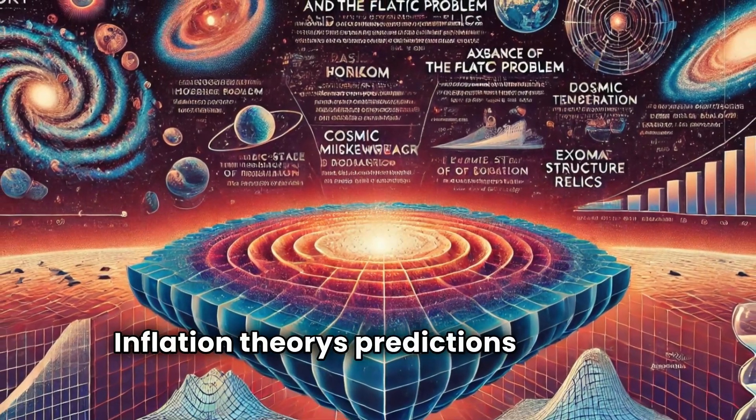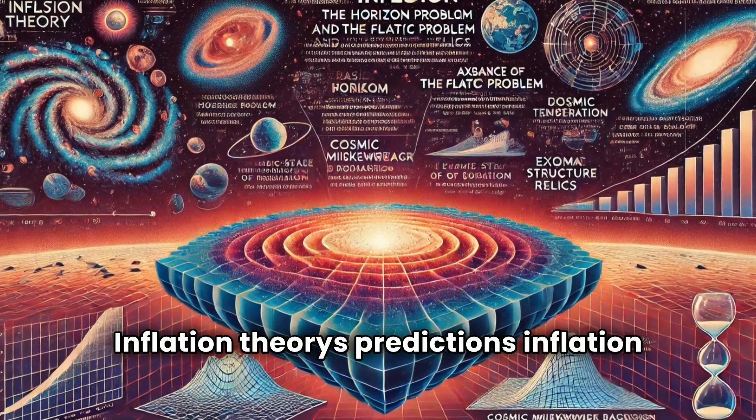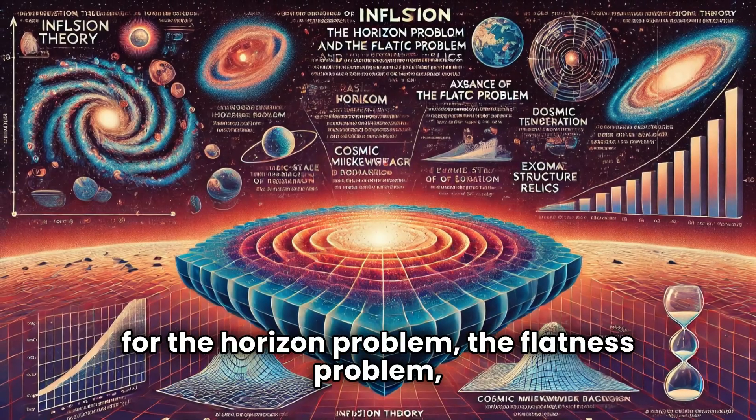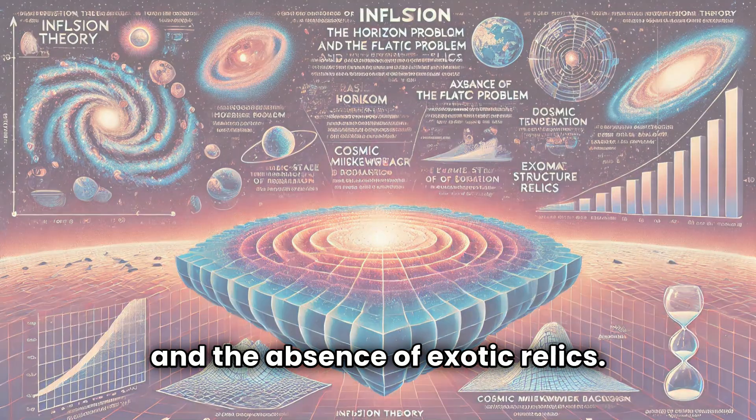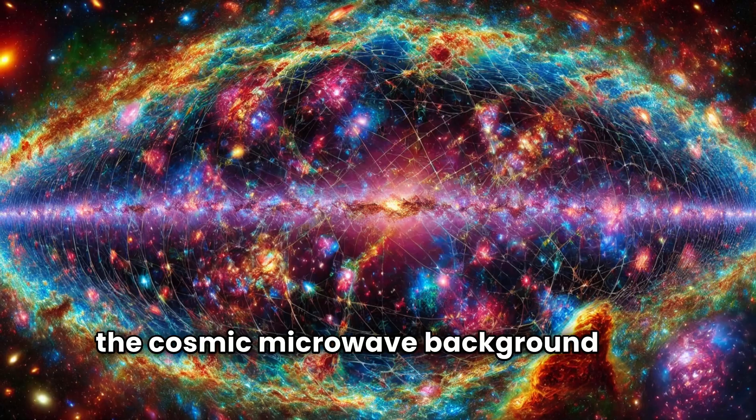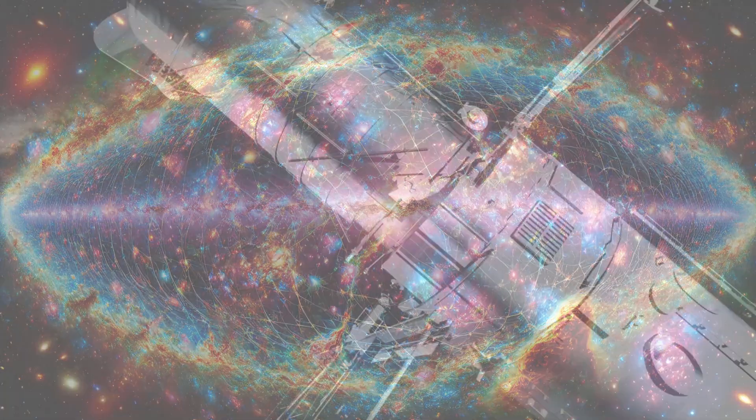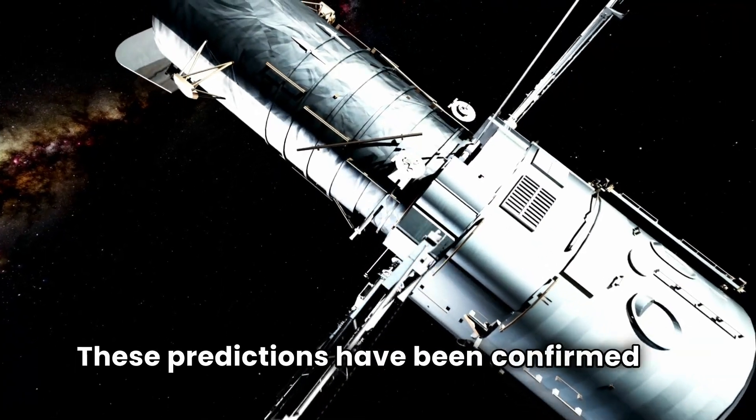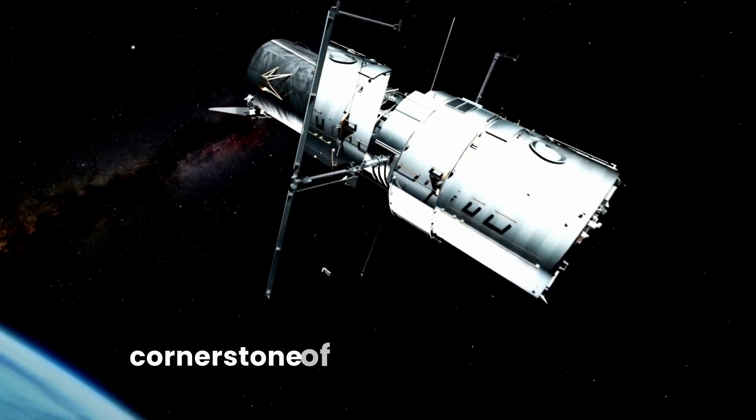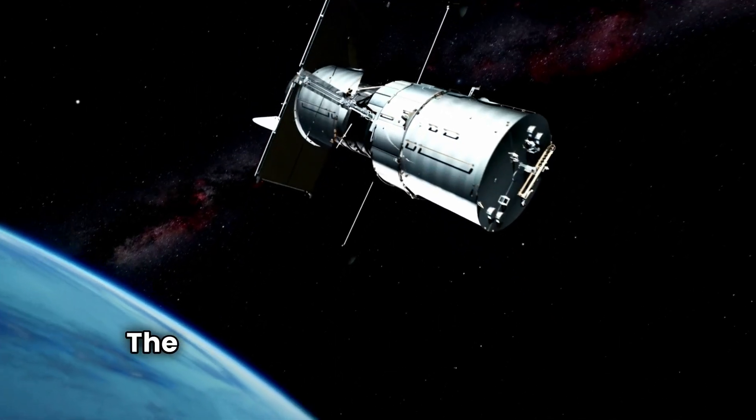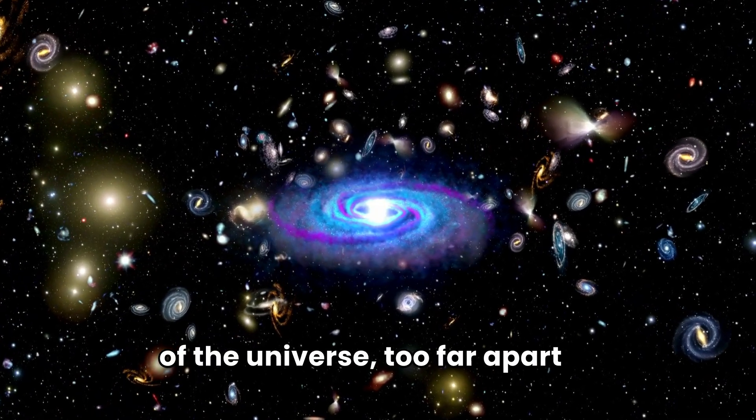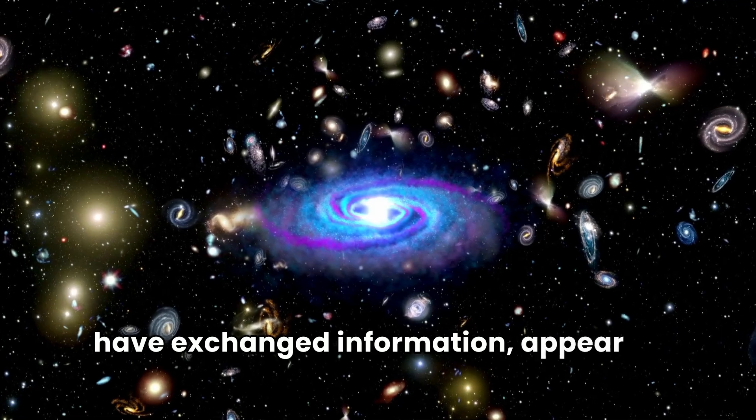Inflation theory's predictions. Inflation theory provided explanations for the horizon problem, the flatness problem, and the absence of exotic relics. It also predicted observable features in the cosmic microwave background and the large-scale structure of the universe. These predictions have been confirmed by numerous observations, reinforcing inflation as a cornerstone of modern cosmology. The horizon problem questions how different regions of the universe, too far apart to have exchanged information, appear so uniform.